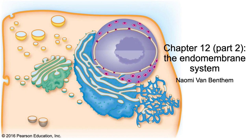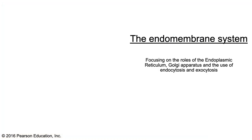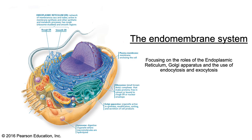Hey everyone, it's Naomi Van Bentham. Today I get to present on chapter 12 part 2: the endomembrane system. A quick note about this presentation — I won't have the answers to the questions at the end, but instead we'll weave them into the material so it's easier to see how the right answer is found. The endomembrane system was already touched on in the previous presentation, but here we will focus on the roles of the endoplasmic reticulum, Golgi apparatus, and the use of endocytosis and exocytosis in the production and transportation of proteins.